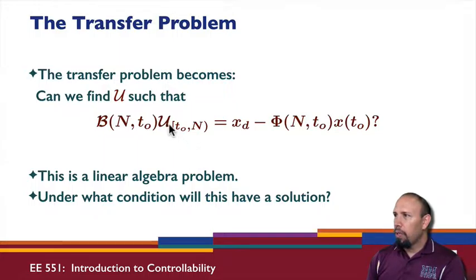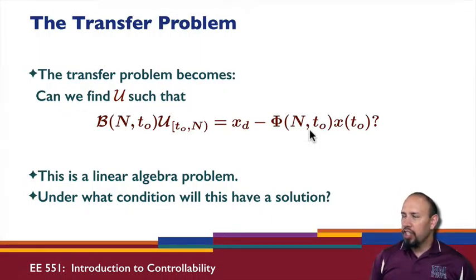And so the transfer problem now becomes, here's our control input, here's our desired final state, here's our initial state. And so we need to know, when can I find a u to satisfy this equation? And so this is a linear algebra problem. And so the question is, under what condition will this equation have a solution?